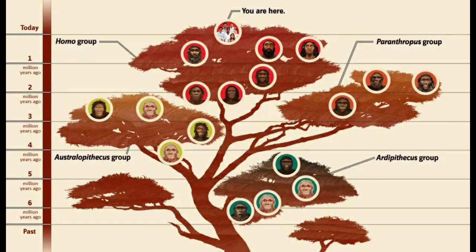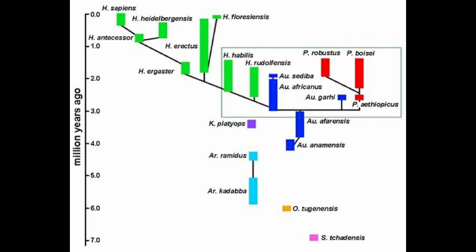These hominins all emerged in Africa, and then way later on, around about 2 million years ago, some of them — Homo erectus — leave Africa, and they go on to evolve into Neanderthals and Denisovans, whereas in Africa, a group that remains in place eventually becomes the first Homo sapiens.